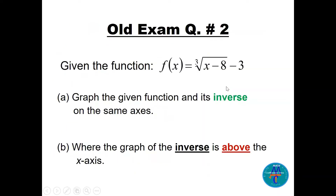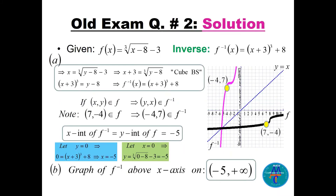The question asks where the graph of the inverse is above the x-axis. We need the x-intercept of the inverse, which equals the y-intercept of the function f. Setting y = 0 in f gives x = −5; equivalently setting x = 0 in f gives y = −5. So the x-intercept of the inverse is −5, and the graph of the inverse is above the x-axis from −5 to infinity.